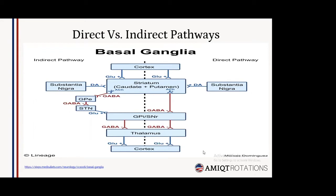In the indirect pathway, there is an overall decrease in movement. Signals from the striatum inhibit the globus pallidus externus, which is then unable to inhibit the subthalamic nucleus. The subthalamic nucleus sends glutamate (excitatory) signals to the globus pallidus internus, enabling it to release GABA. This GABA inhibits the thalamus and thus the cortex. Both pathways are modulated by the substantia nigra via dopamine — D1 in the direct pathway and D2 in the indirect — overall increasing movement. In Parkinson's disease, dopamine production is decreased, impairing both pathways and resulting in bradykinesia or akinesia.